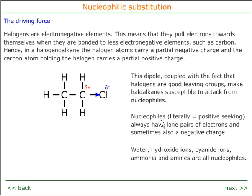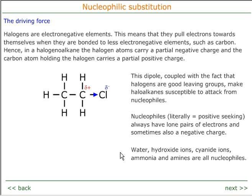Phile means liking or seeking, and nucleo refers to the nucleus being positive, so nucleophile means positive-seeking. Nucleophiles always have at least one lone pair of electrons and sometimes even a formal negative charge. Water, hydroxide ions, cyanide ions, and ammonia are all common nucleophiles. The hydroxide and cyanide ions have formal negative charges.